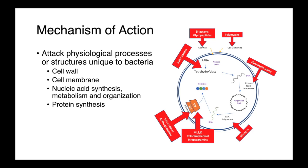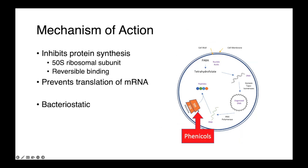Chloramphenicol is a protein synthesis inhibitor. It works by binding to the 50S ribosomal subunit reversibly and preventing translation of mRNA. Like many other protein synthesis inhibitors, chloramphenicol is bacteriostatic, so it doesn't kill the organism, it simply arrests its growth.